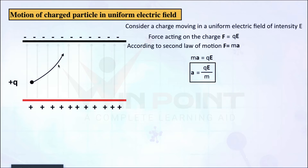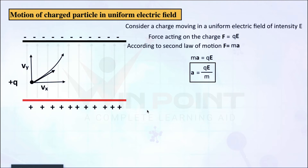Now we are going to consider the velocity. When finding the instantaneous velocity, we draw a tangent at any point on the path. We split that velocity into two components, like we did in projectile motion — one is Vx and one is Vy. In the x direction, the horizontal displacement is equal to velocity into time, so x equal to Vx into t.